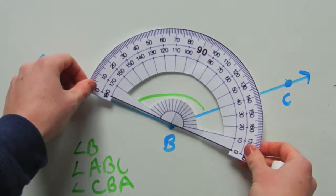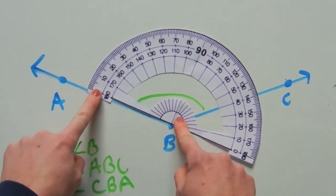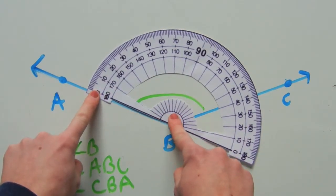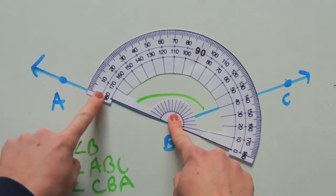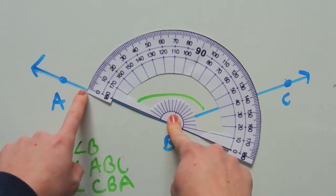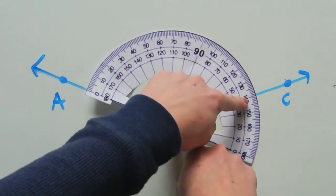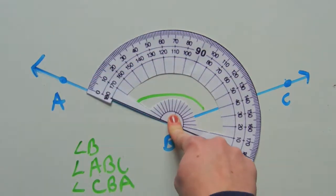So I'm going to go ahead and set it on vertex B, and I'm going to line up the black horizontal line representing zero on my side BA. So now, I'm going to go around starting from the left side of my protractor until I reach my side BC.